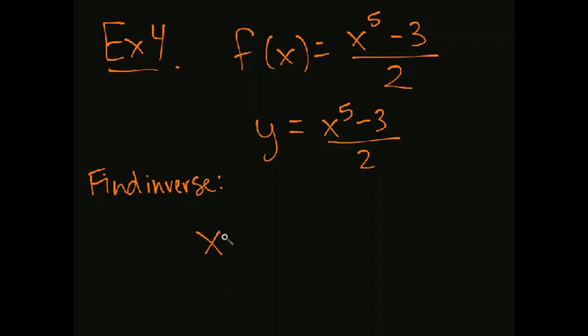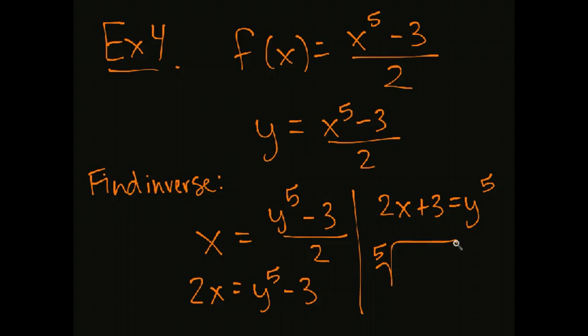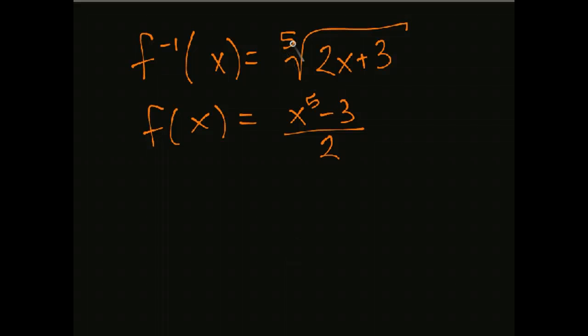So we swap the x and the y. Now we want to solve for y. So we'll multiply by 2, I'm going to keep going over here. Then I'm going to add 3, and lastly, I'm going to take the fifth root. So there is my inverse function. So f inverse is the fifth root of the quantity 2x plus 3. f was x to the fifth minus 3 over 2.